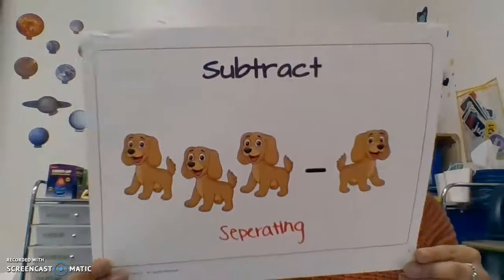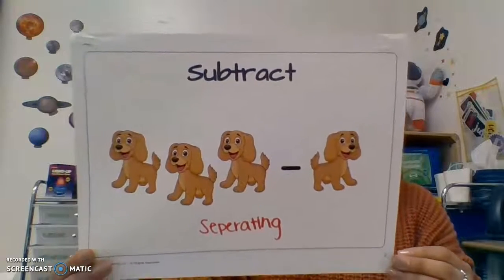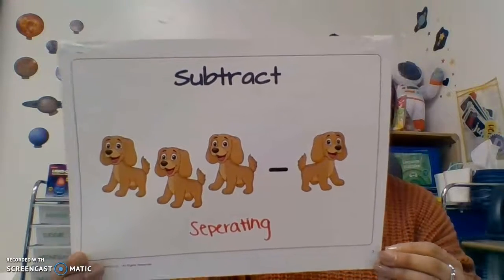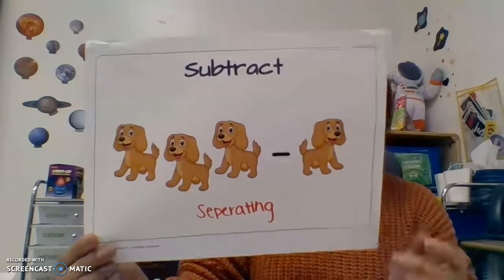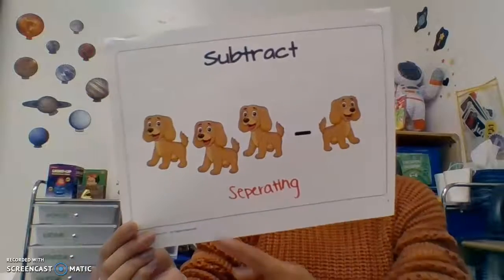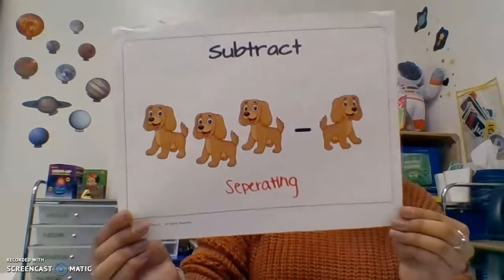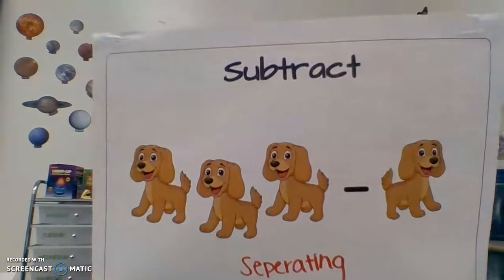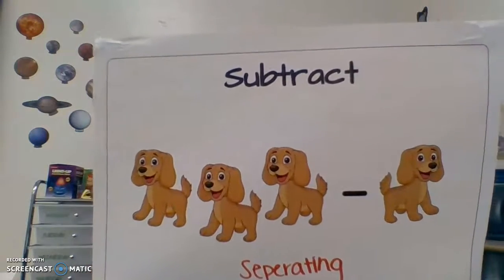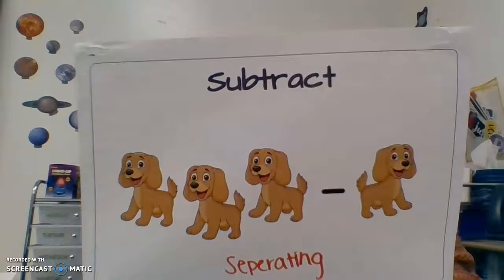Subtract: when we are subtracting, we are taking away, we are separating. If we have three dogs and we're taking away one, that means we are subtracting — we're separating.